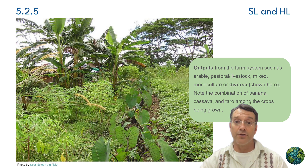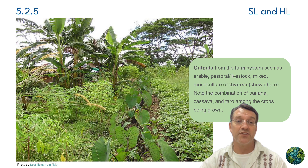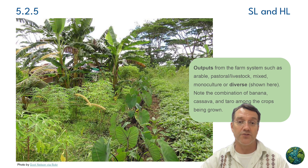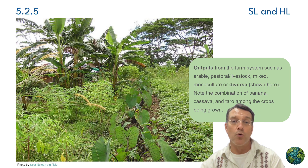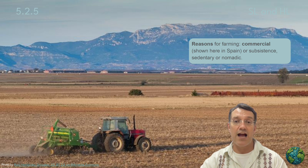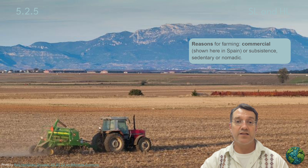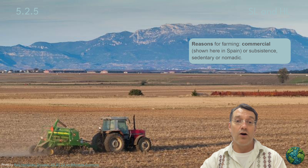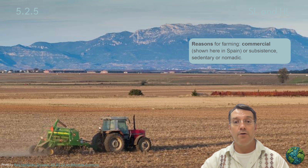This image shows diverse cropping — notice the combination of banana, cassava, and taro plants all growing together. It represents polyculture, or mixed farming systems, where multiple crops are grown in the same area. This approach can be more resilient than monoculture systems because it reduces risk and can make more efficient use of soil nutrients and space. This landscape shows commercial agriculture in Spain — large-scale, mechanized farming designed to produce crops for market sale. Commercial systems like this prioritize efficiency and yield to generate profit, often using intensive methods including machinery, fertilizers, and pesticides to maximize production.